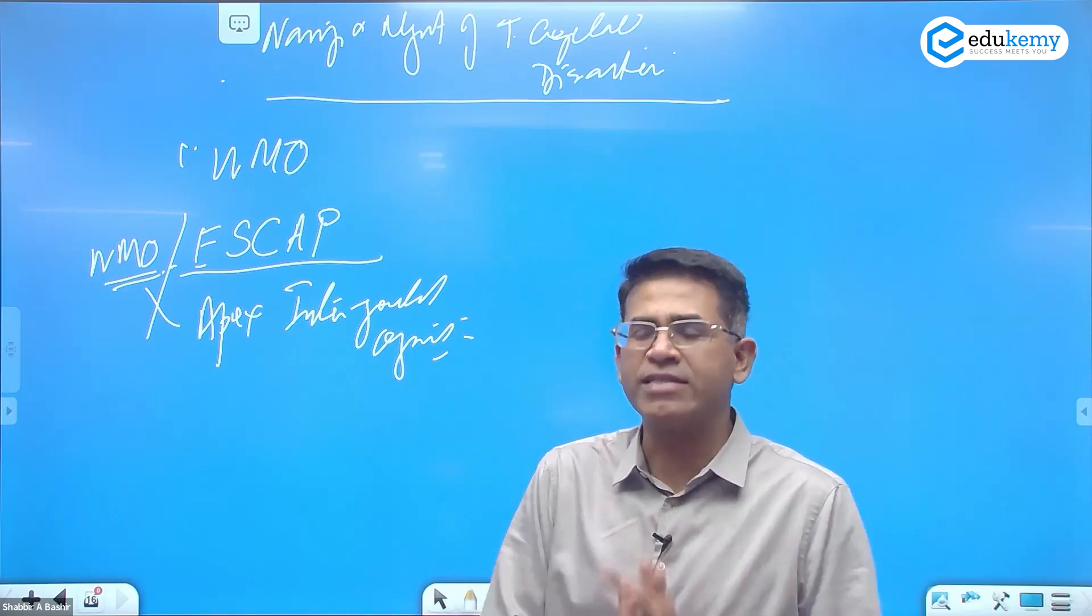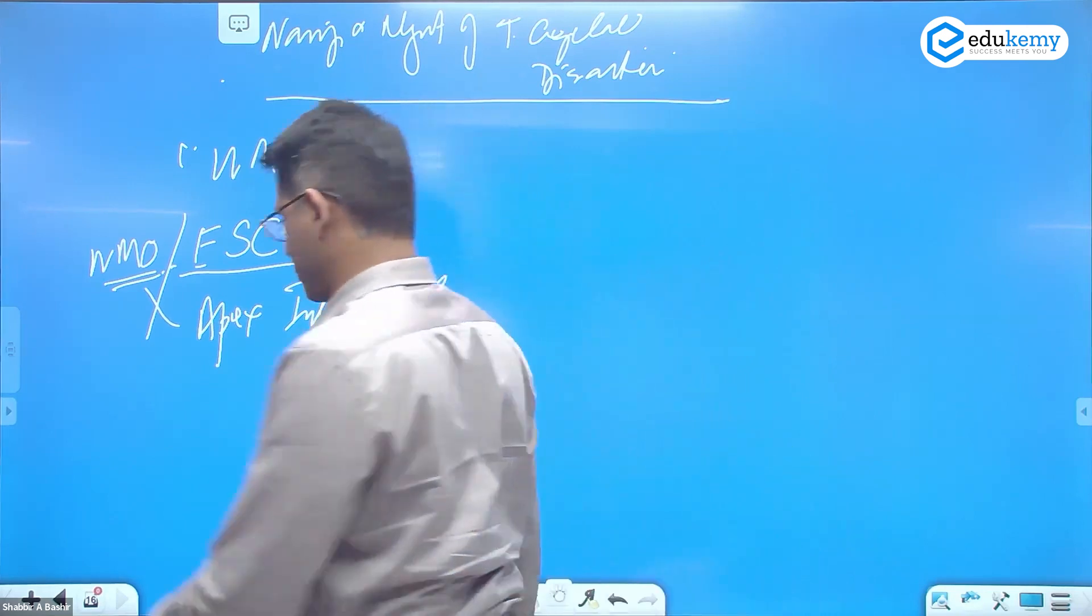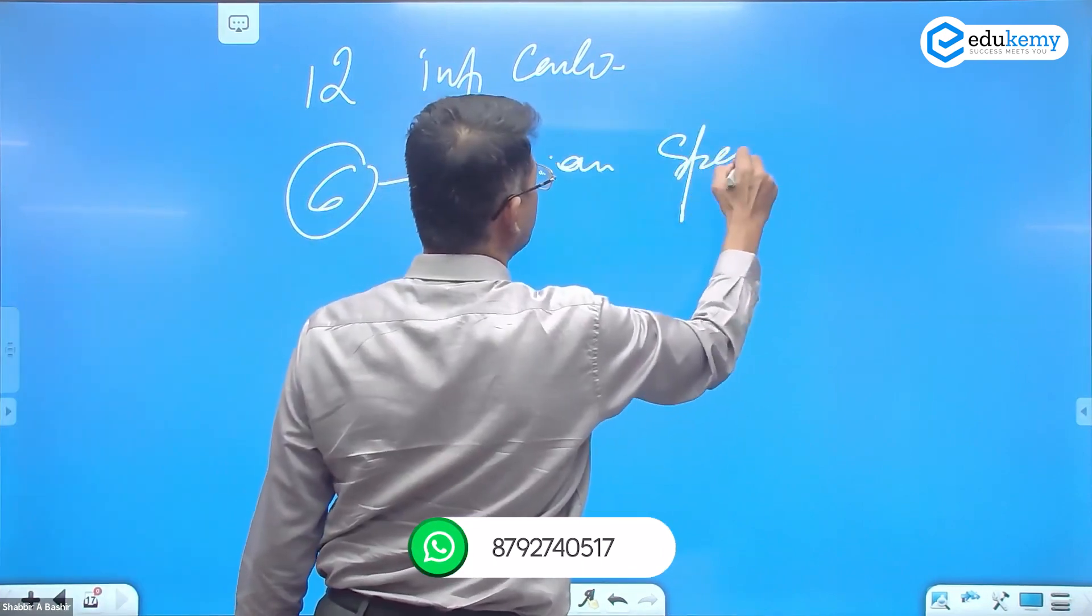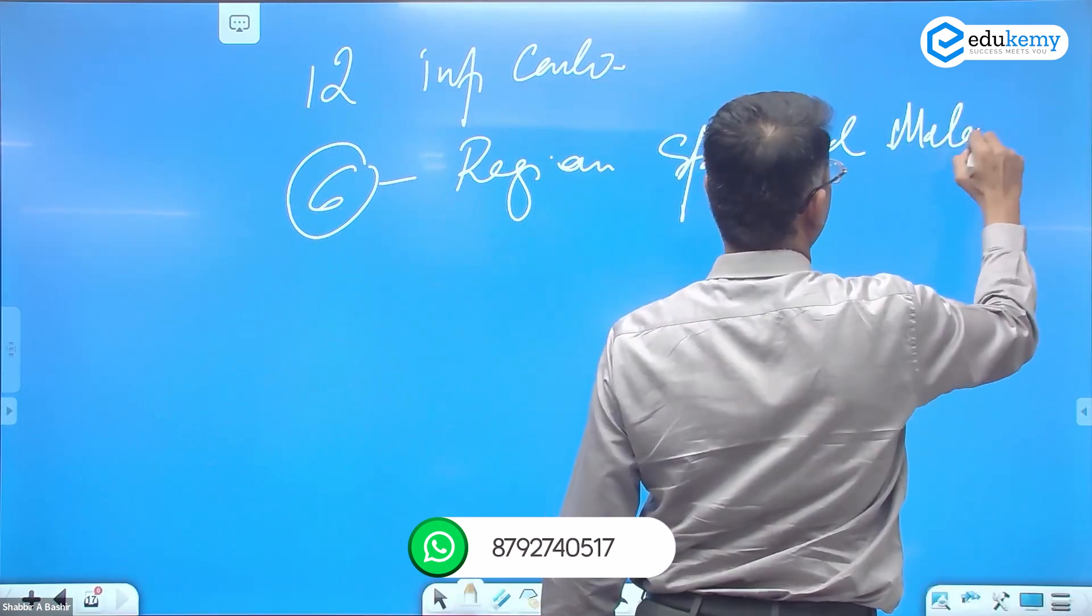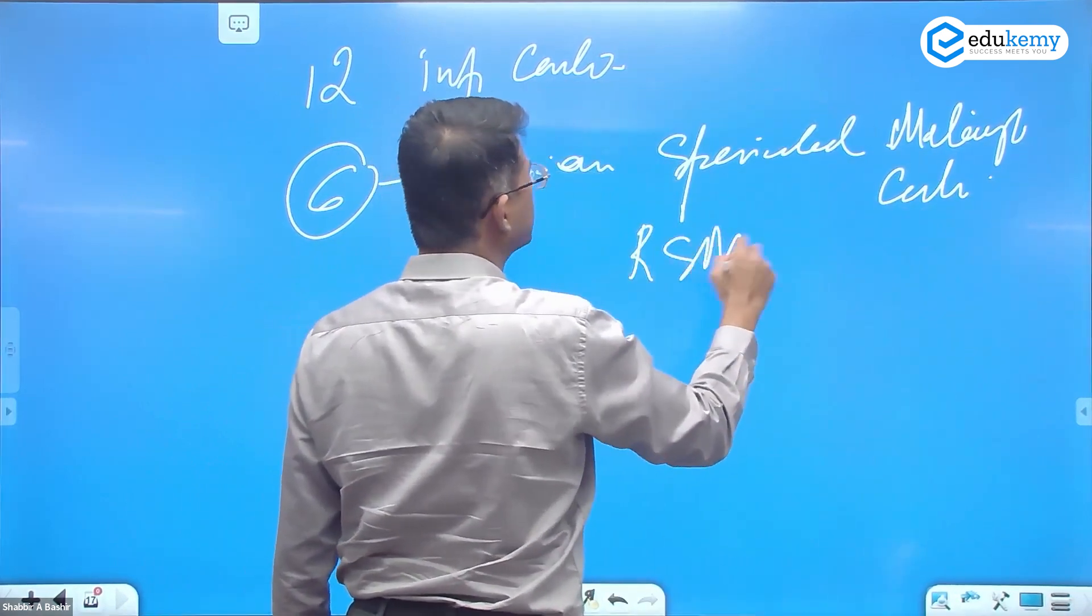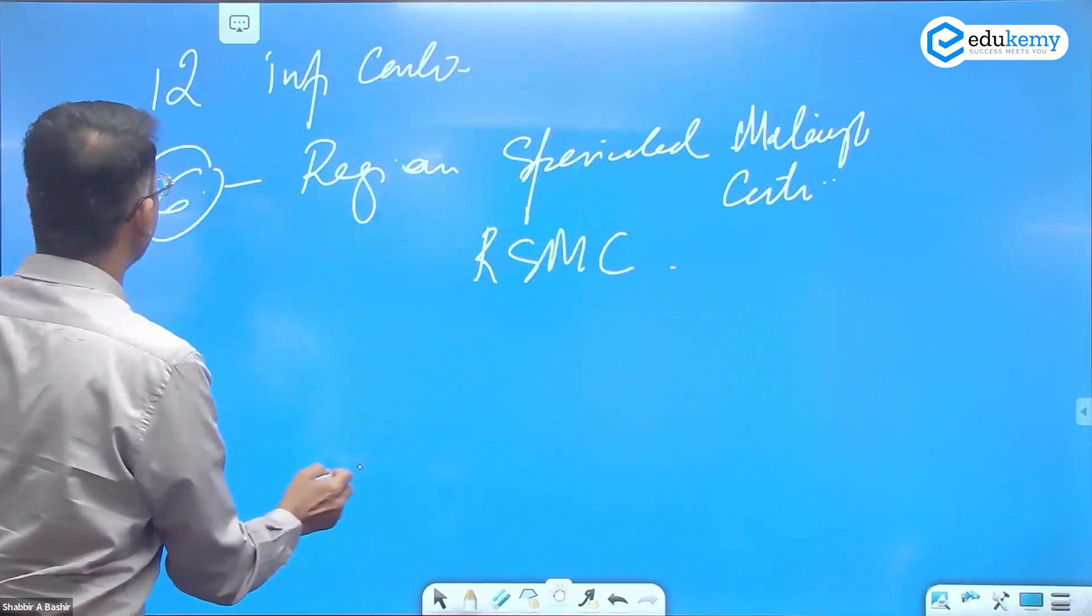Under this organization, there are 12 centers. Six of them are called Regional Specialized Meteorological Centers, RSMC.